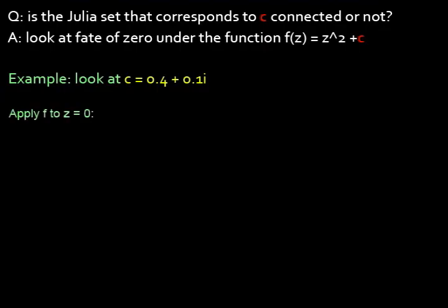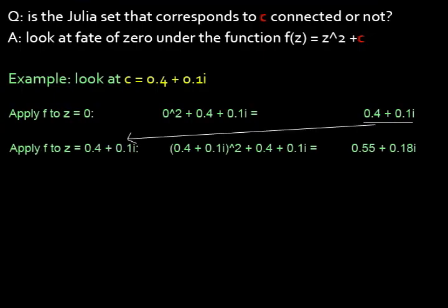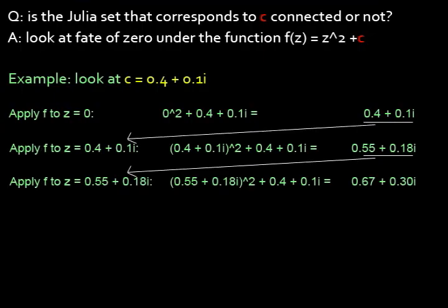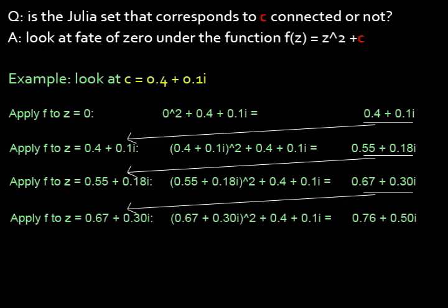So I start with 0 and apply my function to it. So 0² + 0.4 + 0.1i, I get 0.4 + 0.1i. I square what I got and I add 0.4 + 0.1i. I square what I got and I add 0.4 + 0.1i. And I continue in this fashion.